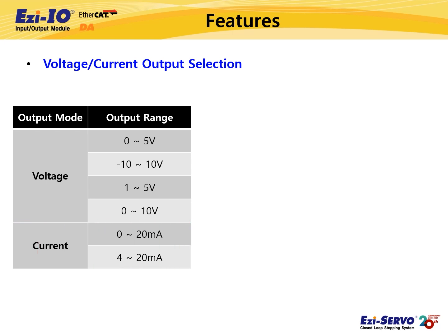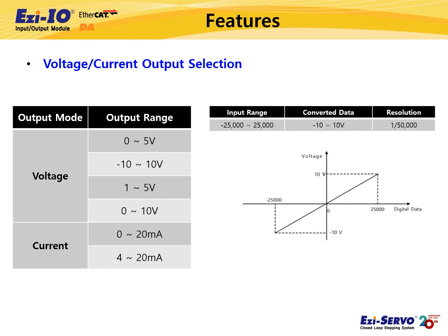Easy IO EtherCAT-DA converts digital input data to an analog signal with a maximum resolution of 50,000. For example, when the voltage output range is 0 to 10 volts, the digital input signals are converted to analog values minus 25,000 to 25,000.